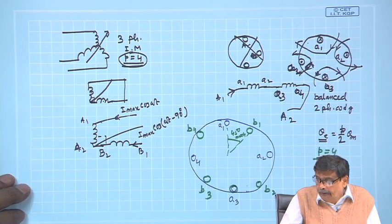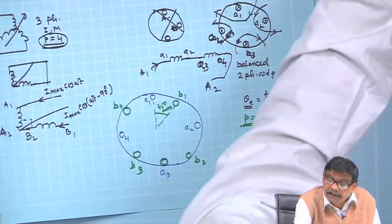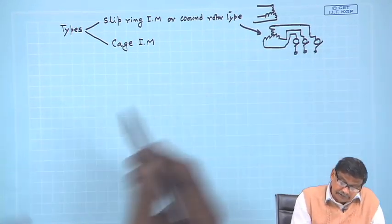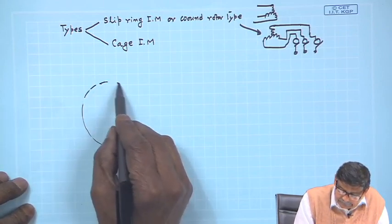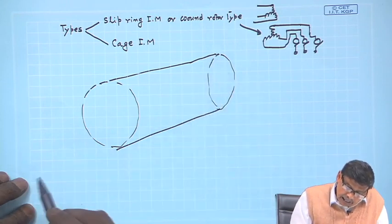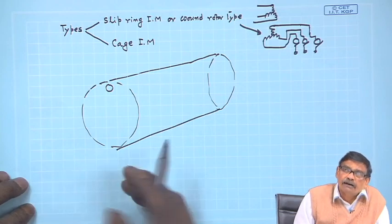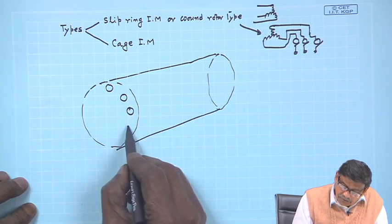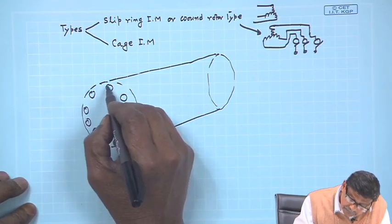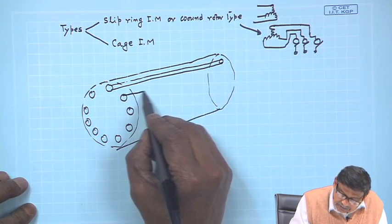We have learned that rotor winding could be of any phase. Now, coming to the cage induction motor — it is very interesting. First, look at the construction. This is the rotor iron. In the rotor slots there will be conducting bars — called bars — made of copper or aluminum. Several such bars will be there, running along the length of the rotor. This is one bar, this is another bar, and so on.